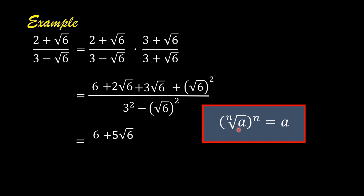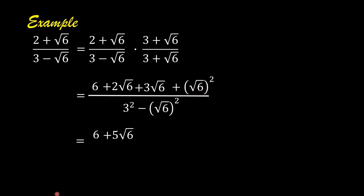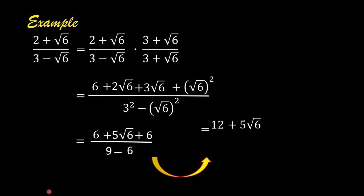The index is understood to be 2, which equals the exponent, so square root of 6 squared equals 6. The denominator becomes 3 squared minus 6, which is 9 minus 6, equal to 3. The numerator simplifies: 6 plus 6 equals 12, plus 5 square root of 6. So the final answer is 12 plus 5 square root of 6 over 3.